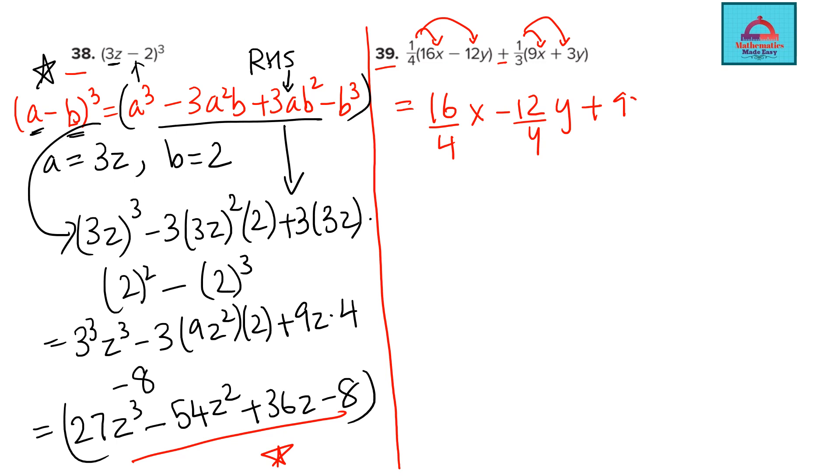So I multiply 1/4 to each term. So it will be 16 over 4z minus 12 over 4y plus 9x over 3 plus 3y. So simplify, cancel the common terms. 4 4s are 16, 4 3s are 12, 3 3s are 9. So you are left with 4x minus 3y plus 3x plus y.